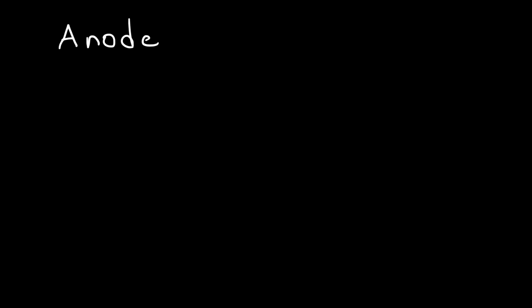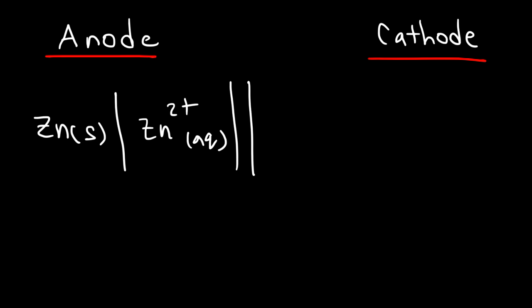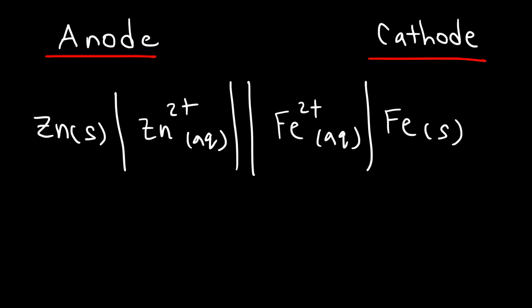For the cell notation, put the anode information on the left and the cathode information on the right. The anode is the zinc electrode (solid phase), separated by a single vertical line from the aqueous phase containing the Zn 2+ cation. A double vertical line separates the two half cells. On the right side we have Fe 2+ in the aqueous phase, separated by a single vertical line from the iron electrode (solid cathode). That is the cell notation for this first example.